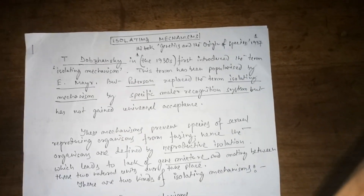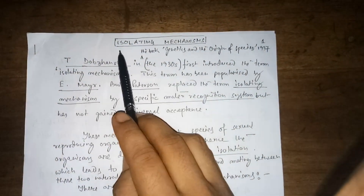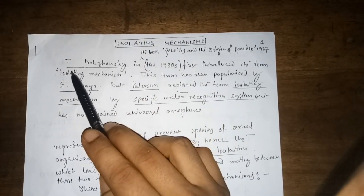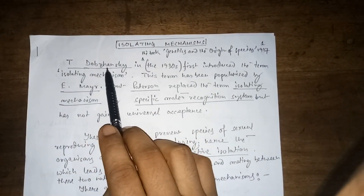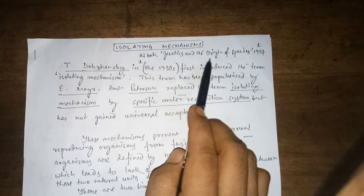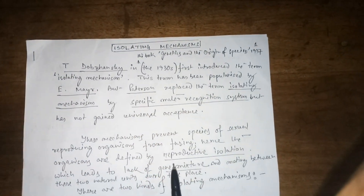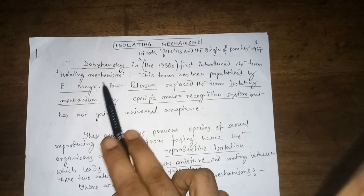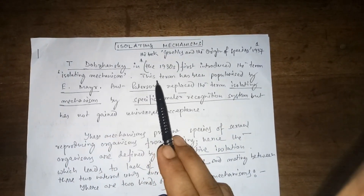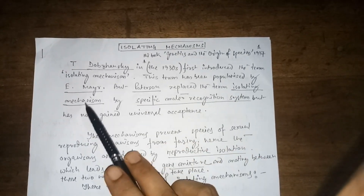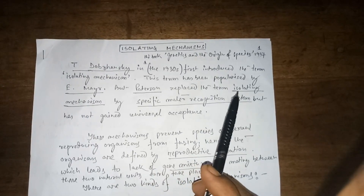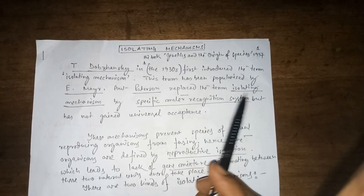Welcome to today's video where we will be learning about isolating mechanisms. T. Dobzhansky, in the book 'Genetics and the Origin of Species' in 1937, first introduced the term 'isolating mechanism.' Later, this term was popularized by Mayr, and was further replaced by Patterson, who changed the term to 'specific mate recognition system.'